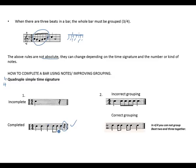On beat 4, because of the silent demisemiquaver rest, we are forced not to use a crochet since the beat has already been broken down. So a quaver, a semiquaver, and a demisemiquaver are used — adding the demisemiquaver with its rest gives you the semiquaver, completing the bar.